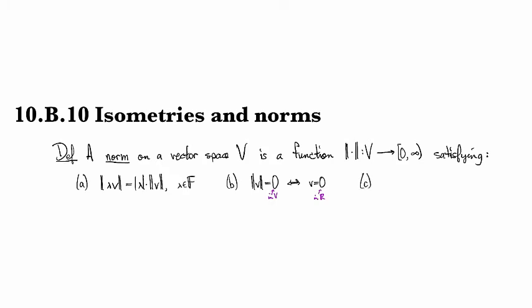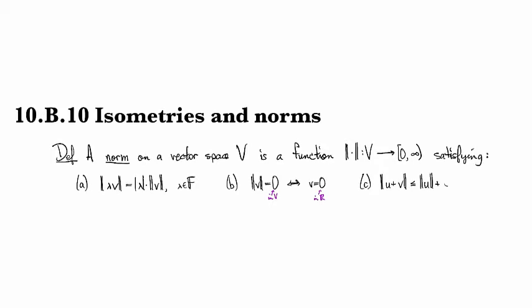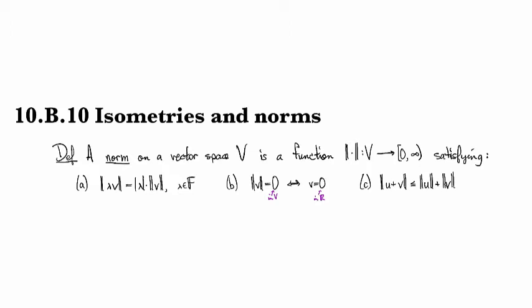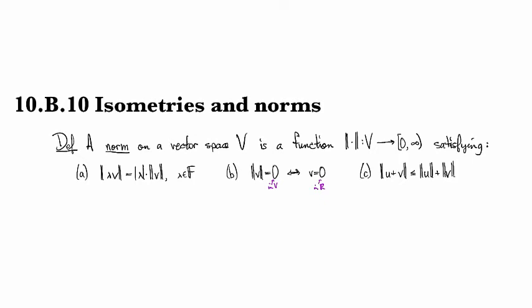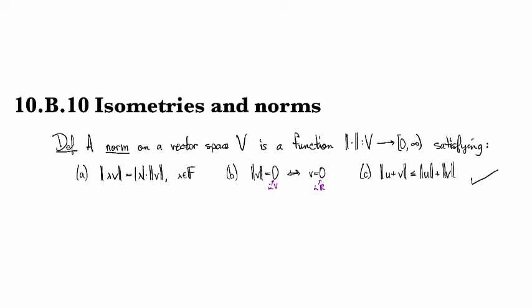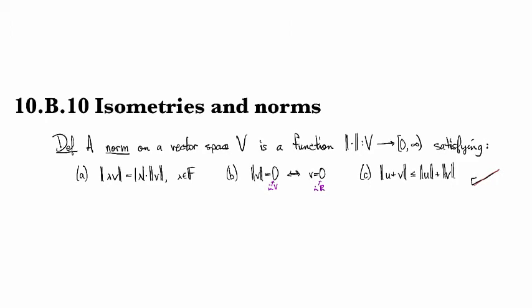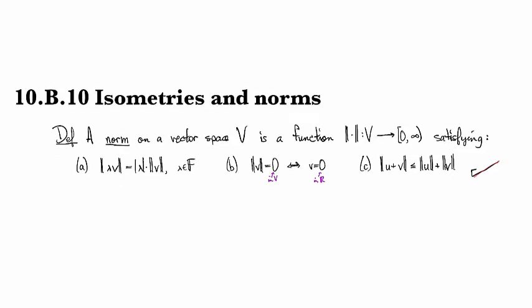And then the last one is that it should satisfy the triangle inequality. This is that the norm of a sum is less than or equal to the sum of the norms. It turns out that they're equal when u and v are parallel or anti-parallel. The reason for this being called the triangle inequality is it corresponds to the idea that the third side of a triangle cannot have a length larger than the sum of the other two sides. If we have a function that assigns vectors to real numbers and satisfies these properties, then we call it a norm.